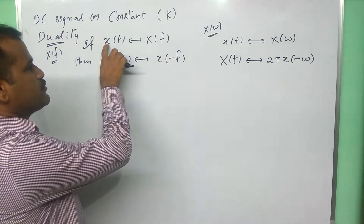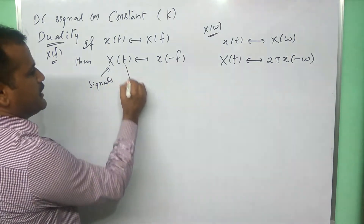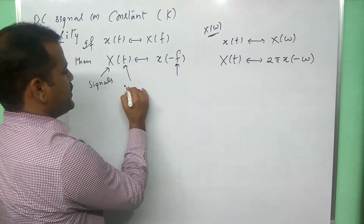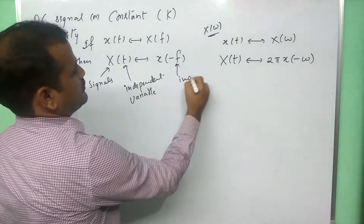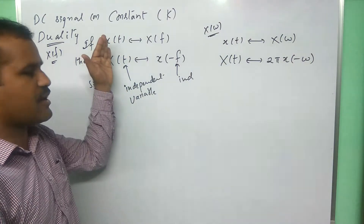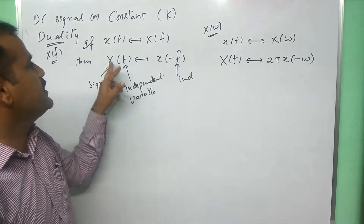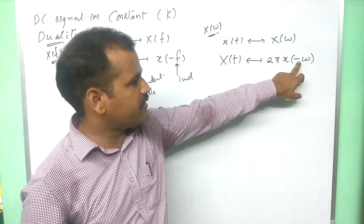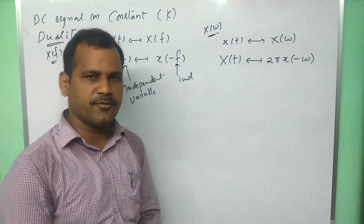Observe what this statement means. Small x and capital X here are signals. Here is the time index, and here is the frequency index — these are independent variables. So, here is the time domain and here is the frequency domain; we are not changing the domains. The left-hand side is always time domain, and the right-hand side is always frequency domain. We are just exchanging the signals from frequency domain to time domain, and correspondingly the signal from time domain goes to frequency domain with reflection. If it is omega analysis, the reflected signal in the frequency domain is multiplied with an extra 2 pi.